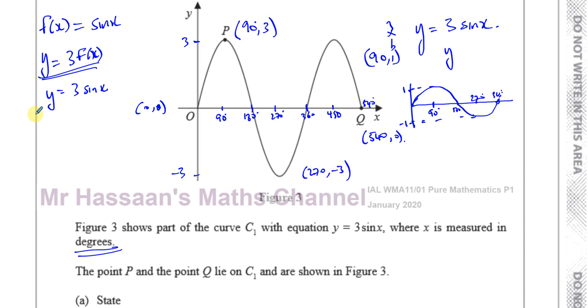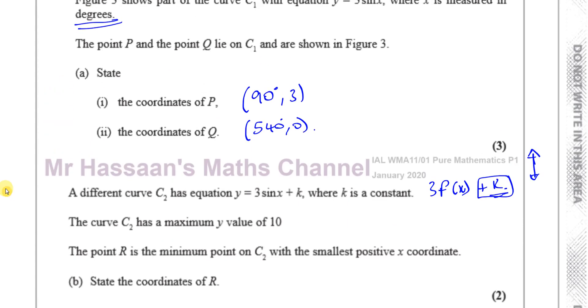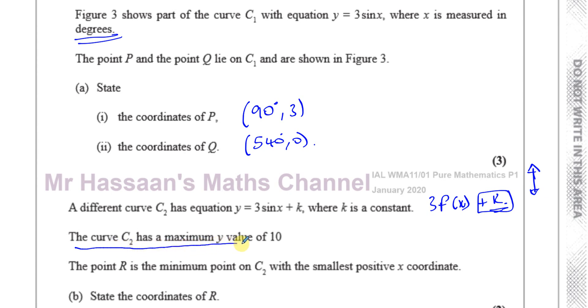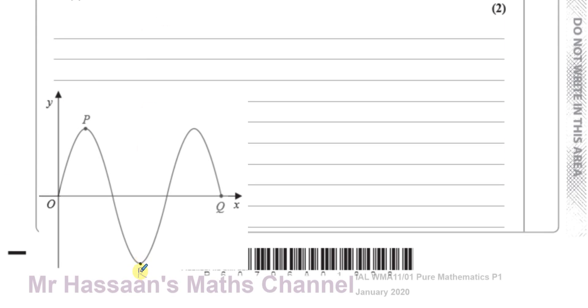So this is (270, -3), but in the curve that we want, we've got to work out what the coordinates of that are. We've got to use the fact that the maximum has become 10 and think about what happened for the maximum value to become 10, then use that to work out what the coordinates of the minimum value are. At the moment R is at -3 and P is at 3, before any transformation has taken place.